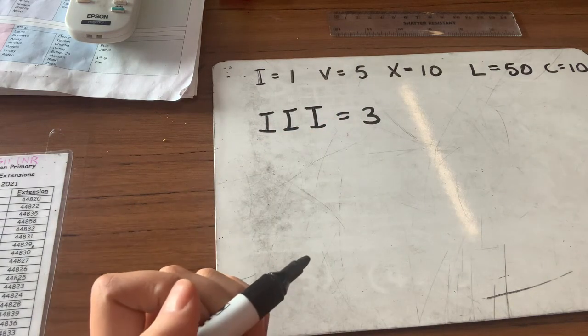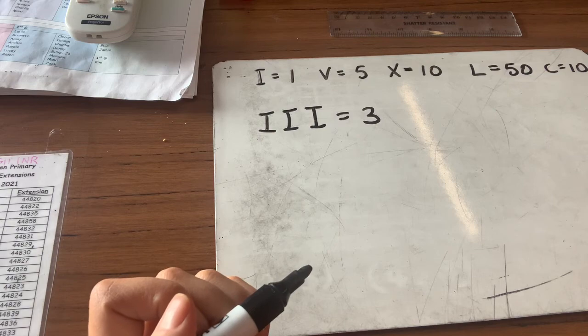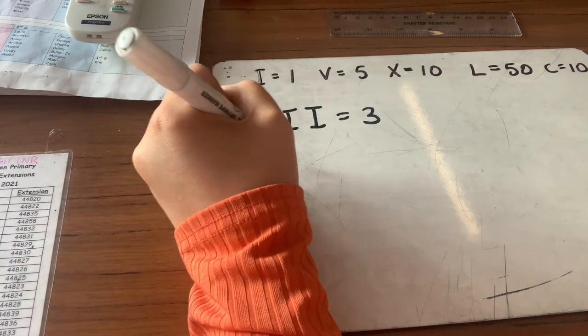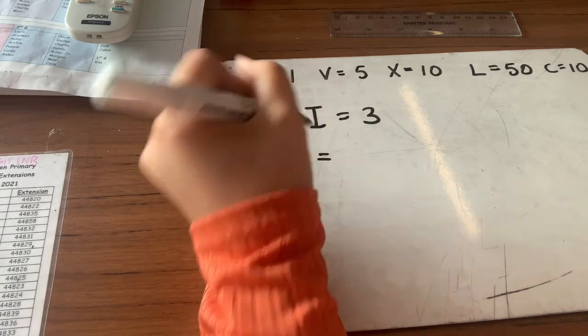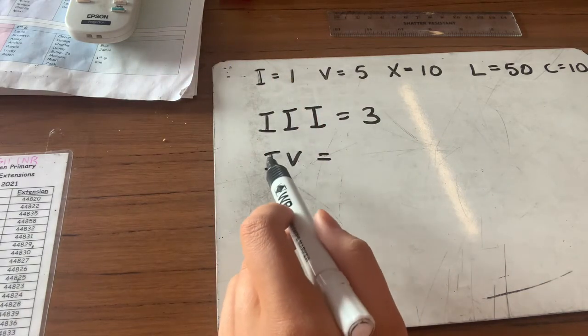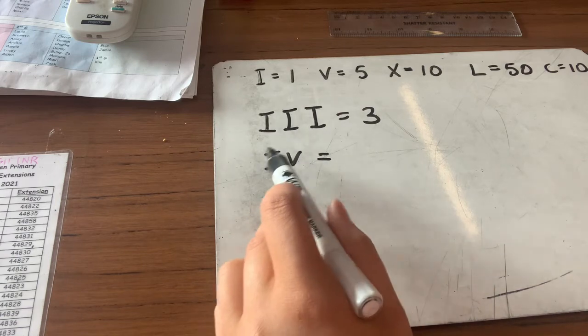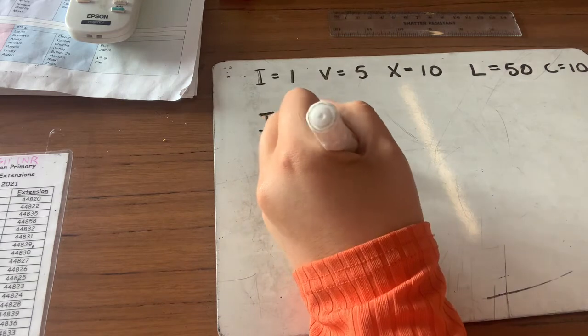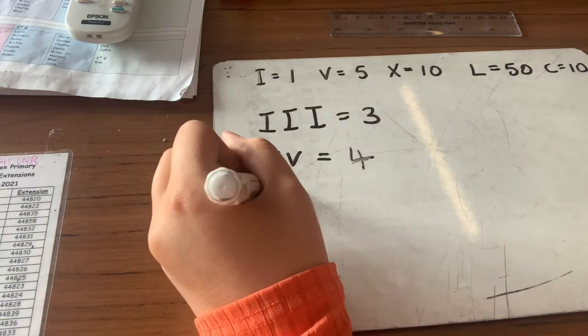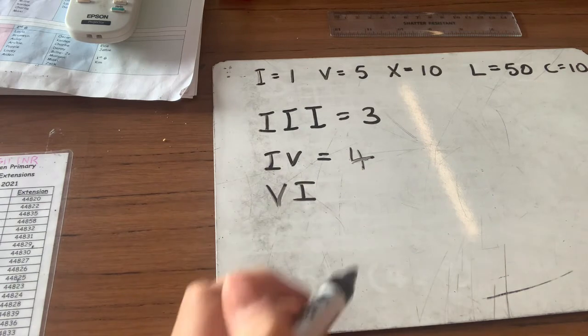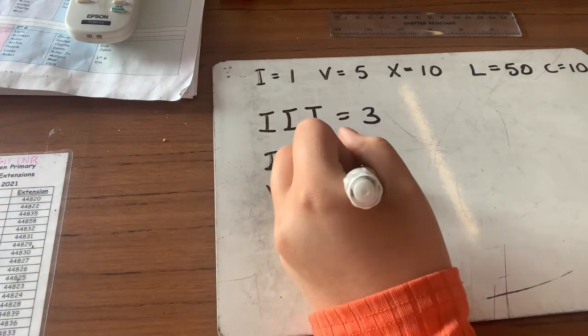But where it gets a bit odd is if we have a bigger number with a smaller number in front of it, it asks us to subtract. So for example, this. So this is a 1 and this is a 5. You would think that's 6. But no, because the smaller number comes first, we take it away. So it's actually 5 minus 1, which is 4. However, if we look at VI, because the bigger number is first, we add the smaller number on. So it would be 5 plus 1, which would be 6.